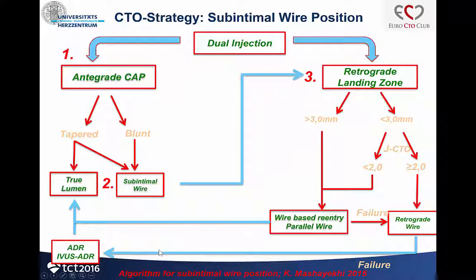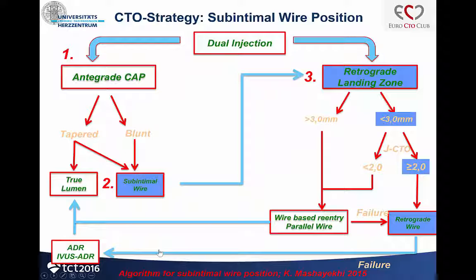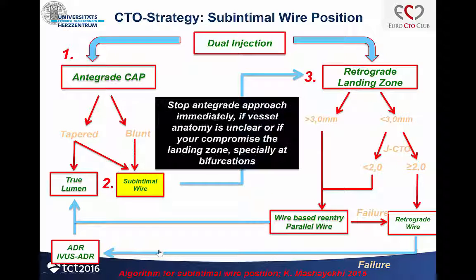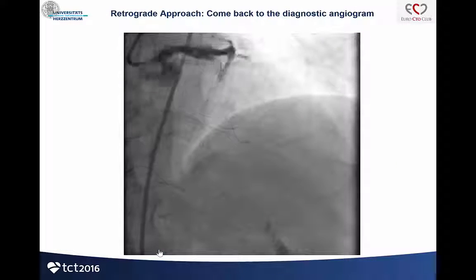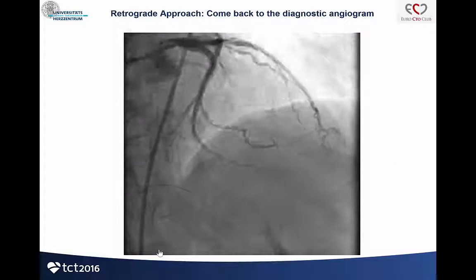What I did was check my personal algorithm. I have a subintimal wire position, a very small retrograde landing zone, and a high J-CTO score. For me, it's a retrograde case then. So I checked the retrograde options.